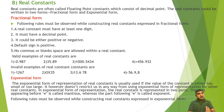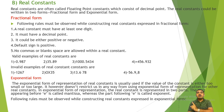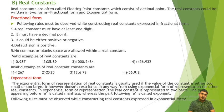Valid examples of real constants in fractional form: minus 0.987 — valid because negative is allowed and a decimal point is present; 35.89 — valid; 1000.5434 — valid; plus 456.932 — valid. Invalid examples: minus 1267 — invalid because there is no decimal point; 0X35 — invalid because there is no decimal point and 0X prefix is not allowed for real constants.